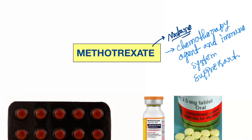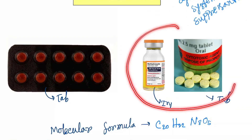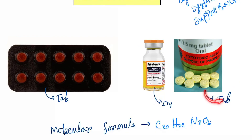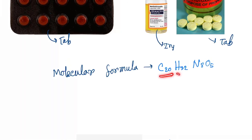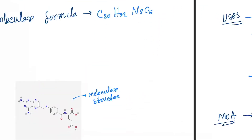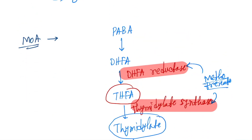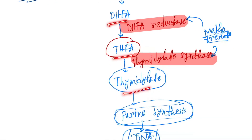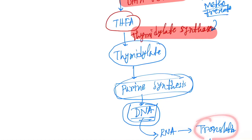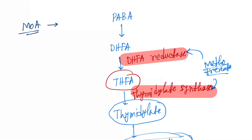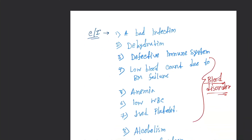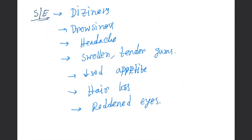Let's revise the drug again. Methotrexate is a chemotherapy agent and immune system suppressant, available in injection and tablet forms. Molecular formula: C20H22N8O5. Uses: cancer, severe psoriasis, rheumatoid arthritis, and juvenile rheumatoid arthritis. Mechanism of action: it blocks the folic acid pathway by inhibiting two enzymes — DHFR and thymidylate synthase — preventing THFA, thymidylate, purine synthesis, DNA, and ultimately protein formation. There are many contraindications and side effects as discussed.